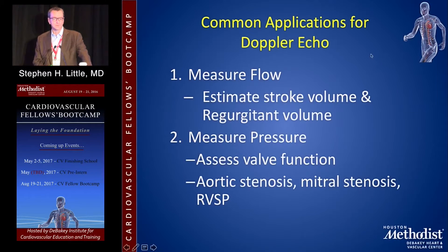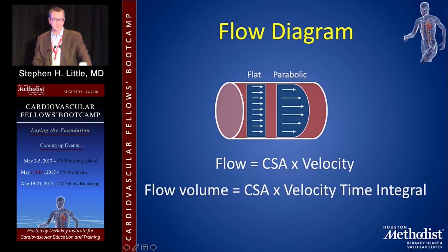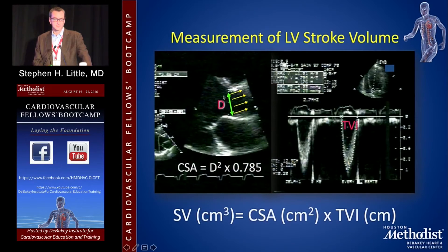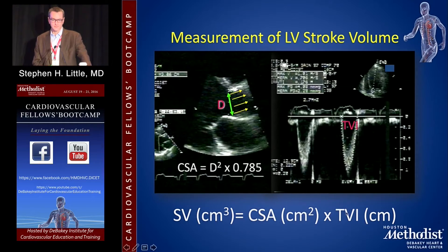We use Doppler for measuring flow — stroke volume and regurgitant volume — and for measuring pressure. Flow through a tube equals cross-sectional area times velocity. Stroke volume in centimeters cubed equals cross-sectional area in centimeters squared times the time-velocity integral, or TVI. Remember: TVI measures distance — centimeters — so it's centimeters times centimeters squared equals centimeters cubed. To get that, we measure the diameter of the LVOT, assume it's circular to derive area, and then trace the LVOT Doppler to get the TVI, which is the distance blood has traveled. Distance times area equals volume.